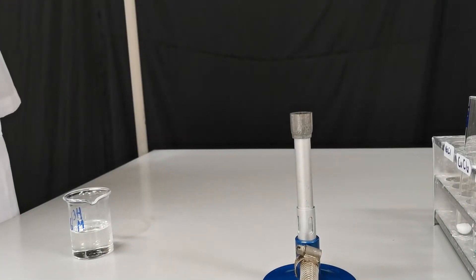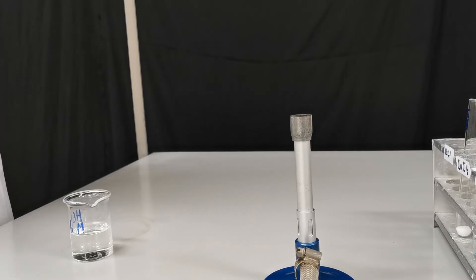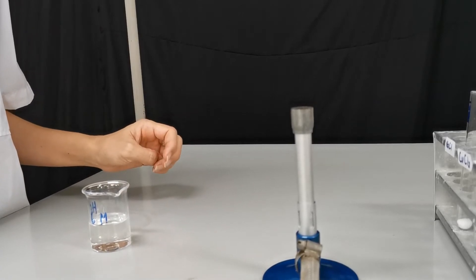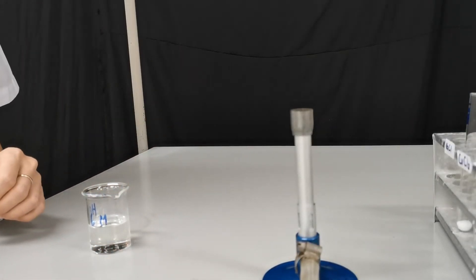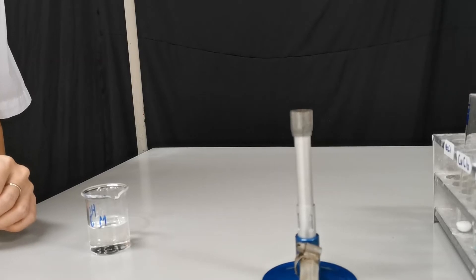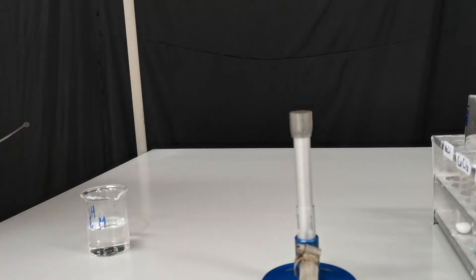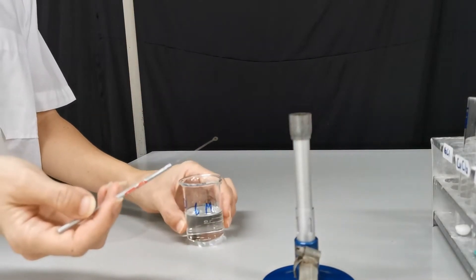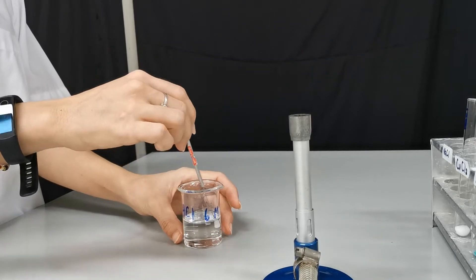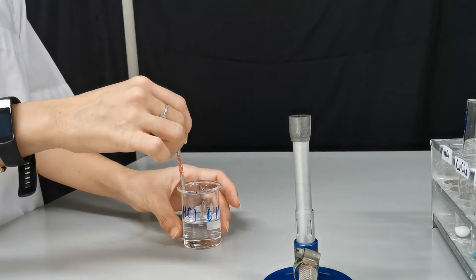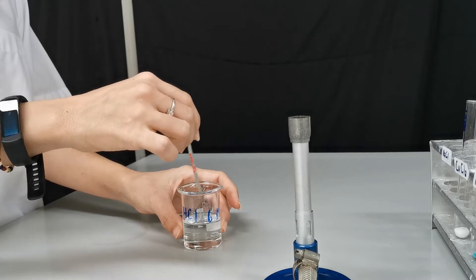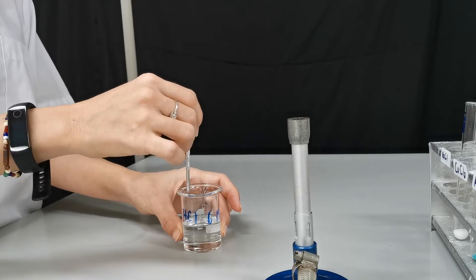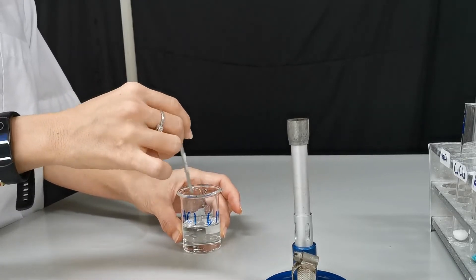Today we're going to learn about flame tests and we're going to test four different ions that are required by IGCSE. These are sodium, copper, potassium, and lithium ions. First we're going to prepare our loop. This metal loop must be washed in concentrated HCl solution. Washing it with acid gets rid of all the impurities and other metal ions that are stuck on the loop.